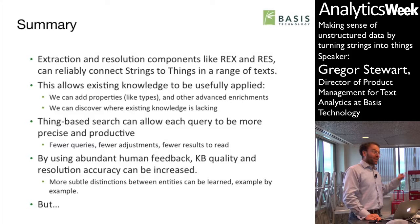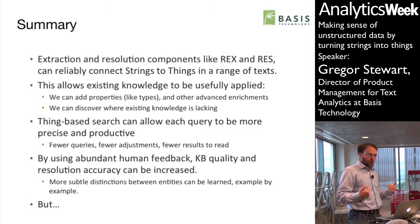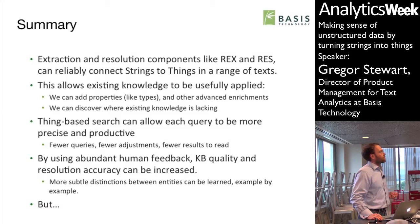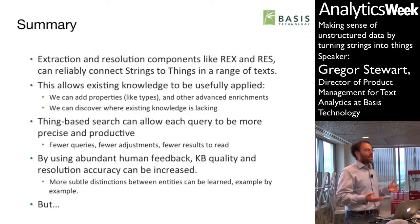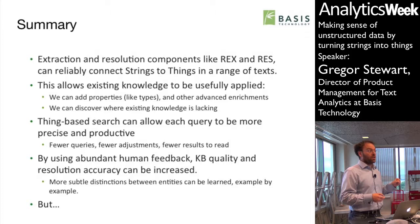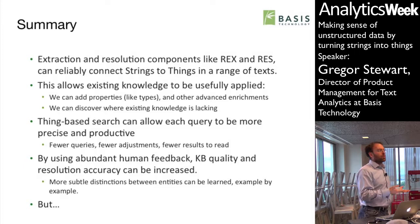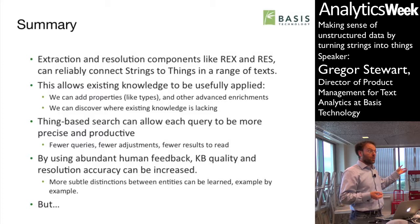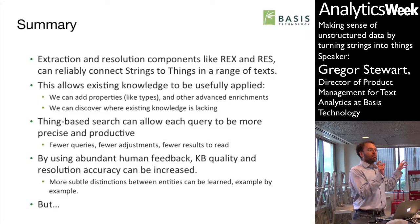In summary: extraction and resolution components like our Rosette Entity Extractor and Rosette Entity Resolver can reliably connect strings to things — or at least their proxies — in knowledge bases like Freebase and Wikipedia. This allows you to use existing knowledge in new ways: adding properties like types — 'chemical weapons agent' — because you can get them from the knowledge base rather than inferring them from text. We can discover where existing knowledge is lacking, find ghosts, associate similarly-mentioned things together even without an entity to connect them with. Thing-based search allows queries to be more precise and productive, meaning you spend less time querying and have fewer results to read.